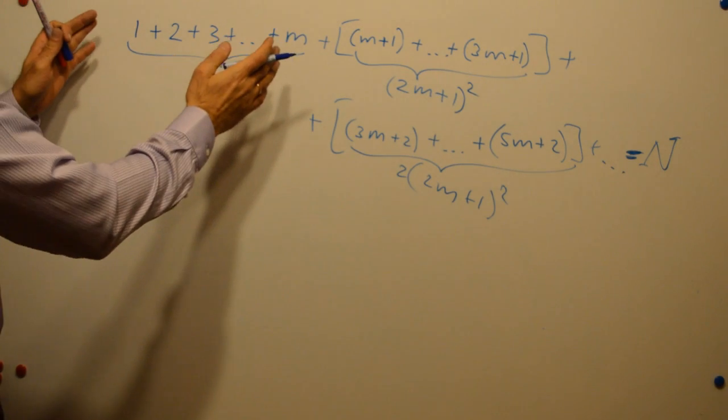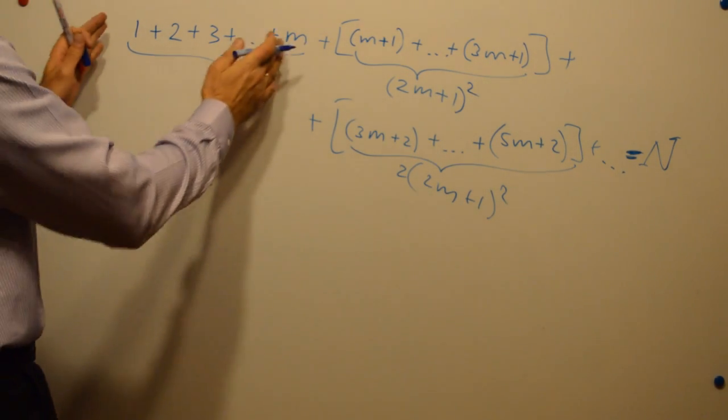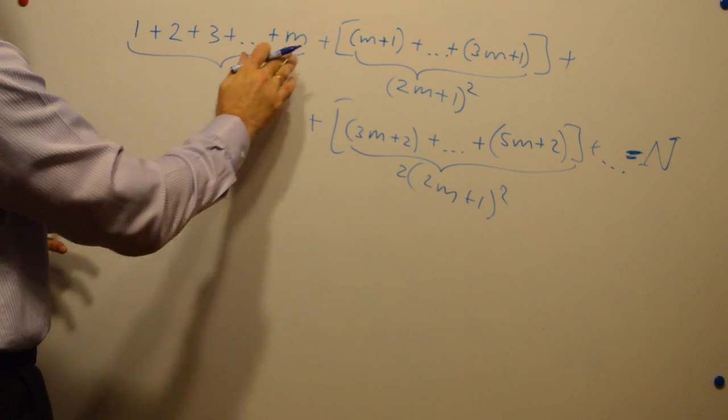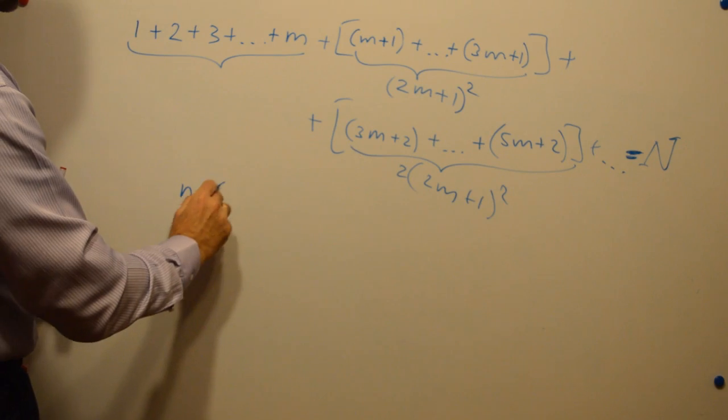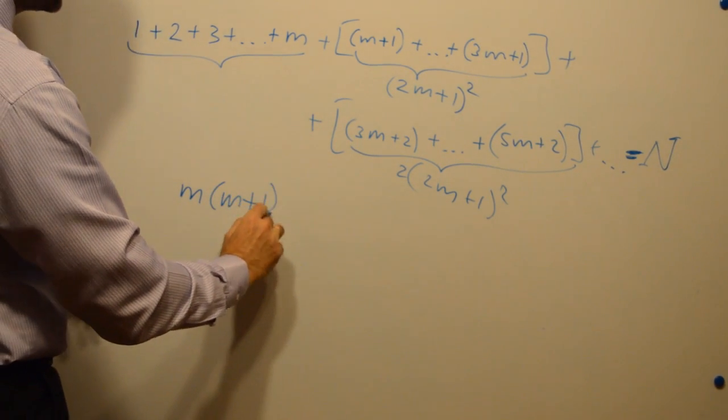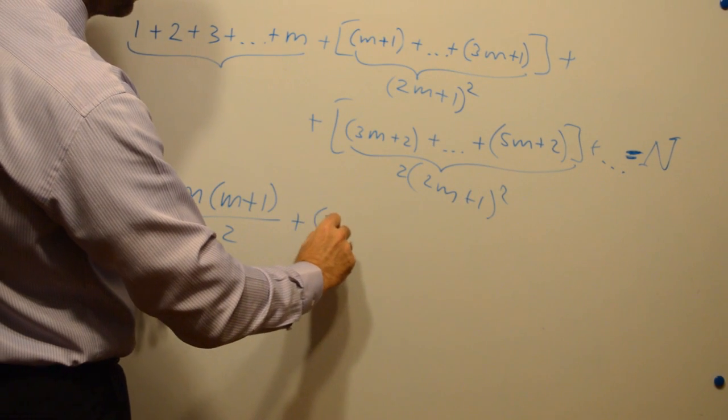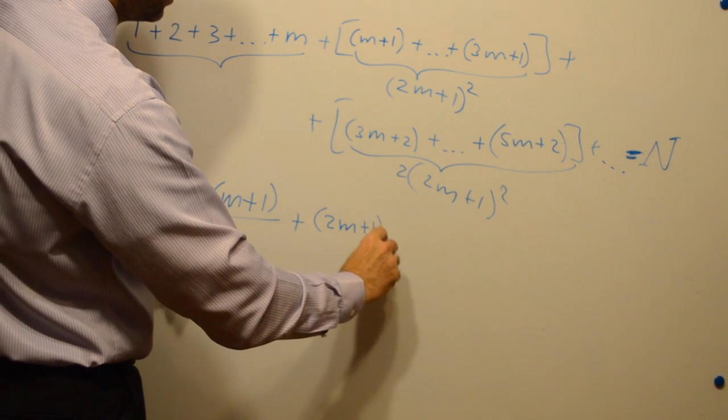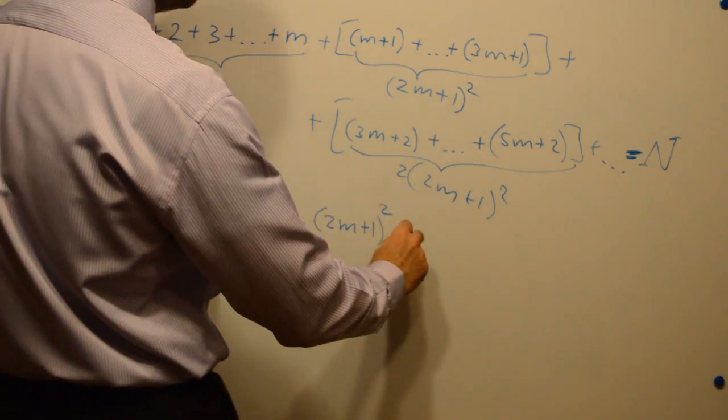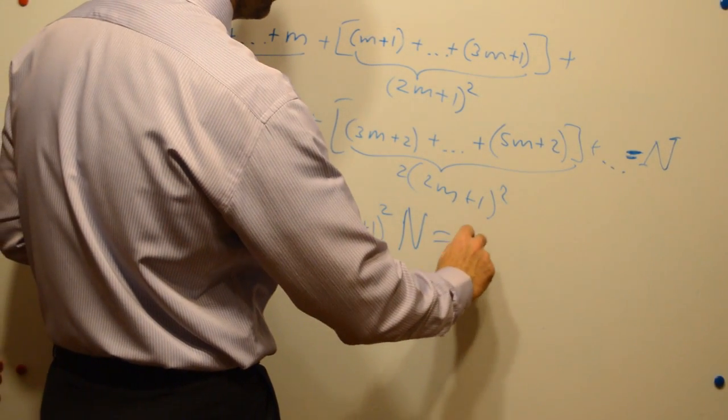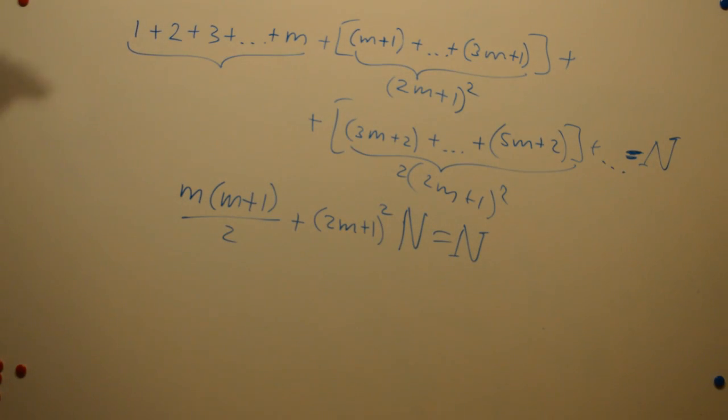So again, we can write a very simple equation. Of course we can simplify this arithmetic sequence, which gives us this. And here we have this again. As we have this again. As we got it before.